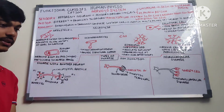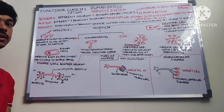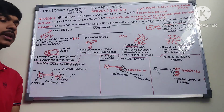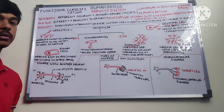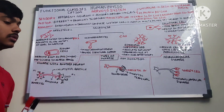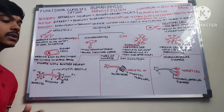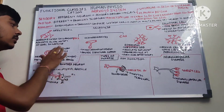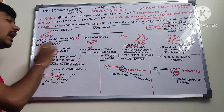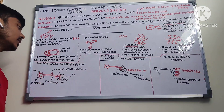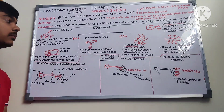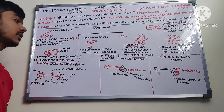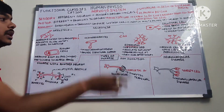We can associate Schwann cells with a disease called multiple sclerosis. In multiple sclerosis, WBCs attack the Schwann cells, leading to the destruction of the myelin sheath, which causes delayed impulse transmission. It is caused by autoimmunity — the degeneration of the myelin sheath due to WBC attack.